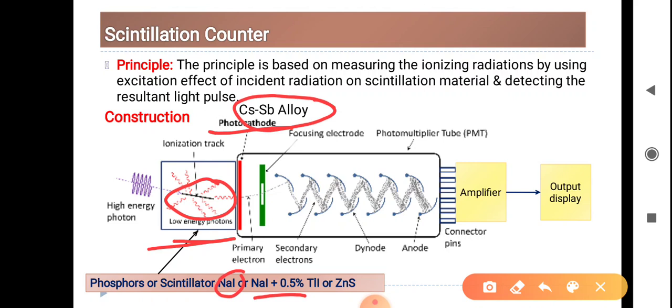This whole tube is a photomultiplier tube. Inside this photomultiplier tube there are dynodes. The first dynode will be at 100 volts, second dynode will be at 200 volts, third one at 300, and so on.